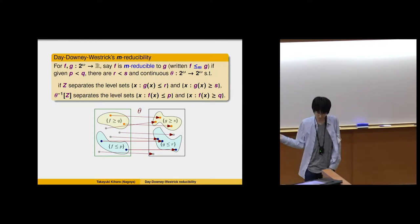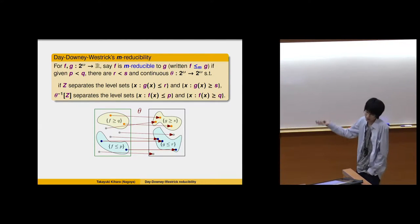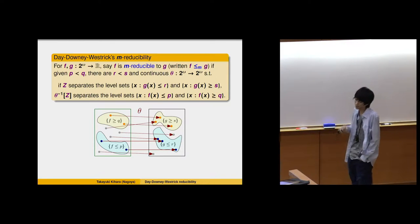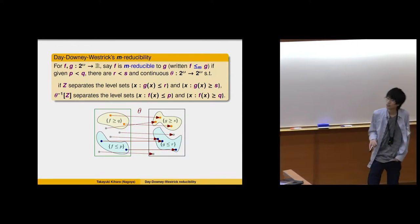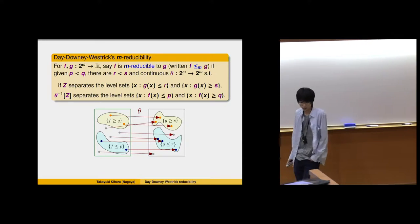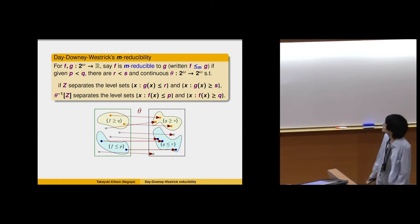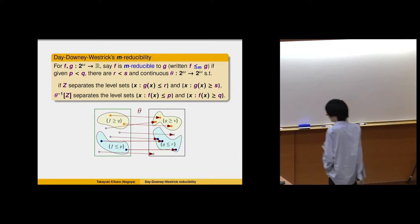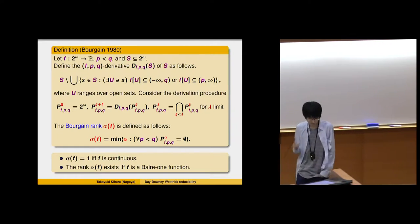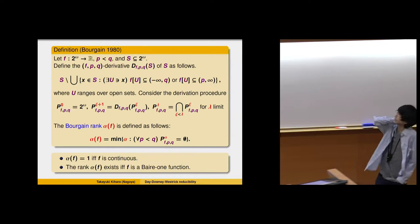Dainy-Westerick found a connection between M-reducibility and some kind of rank in analysis. This is a rank defined by Bruggan in 1980. We consider a function from Cantor space to the real line, with P and Q being rationals, and consider the following derivative procedure, which is something like the Cantor-Bendixson derivative.